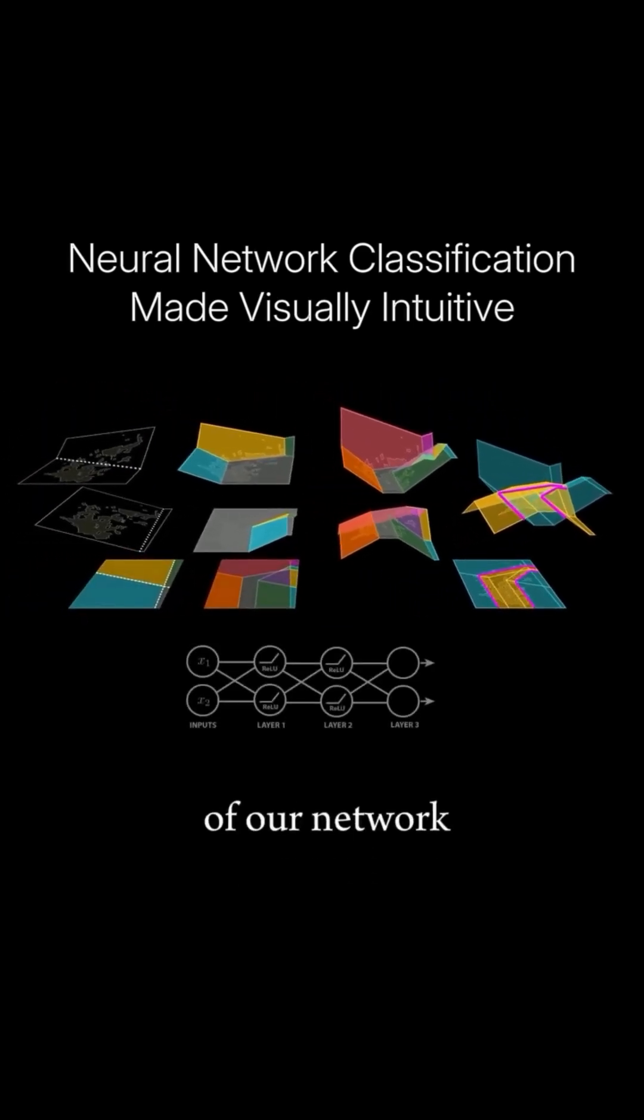So the first layer of our network creates these two folds and four separate regions on our map, which are then split by our second layer into these ten regions, which are used by our final layer to create these surfaces, which intersect in a nice border.